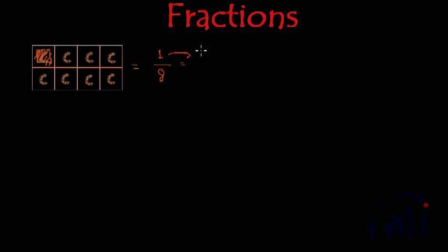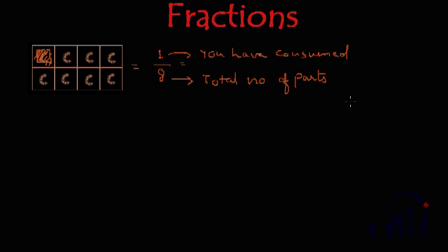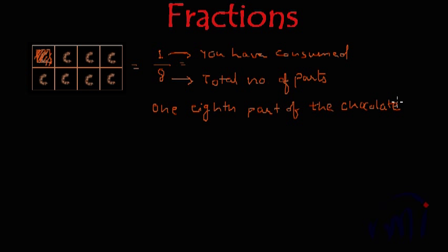Where 1 is the part you have consumed and 8 is the total number of parts into which the chocolate was divided. So in general English you say that you have taken one-eighth part of the chocolate. The way you represent one-eighth part in numbers is written like this — 1 is the part you have taken and 8 is the total number of parts in which the chocolate was divided. And this is called a fraction.